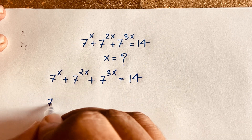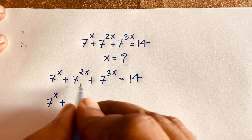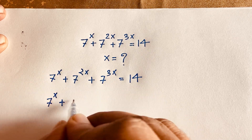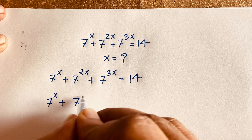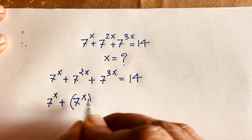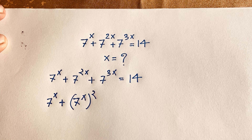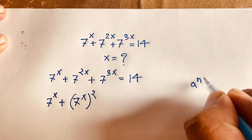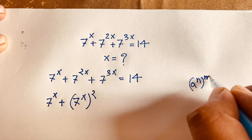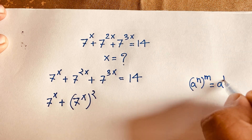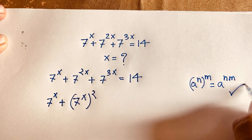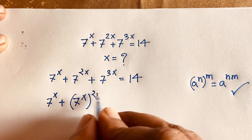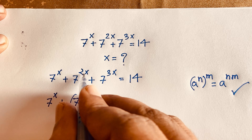Here we have 7 to the power x, and 7 to the power 2x. I can see that this expression will be 7 to the power x, whole to the power 2. Because of the exponential law: a to the power n, whole to the power m, is equal to a to the power nm. According to this law, 7 to the power x whole squared gives 2x.